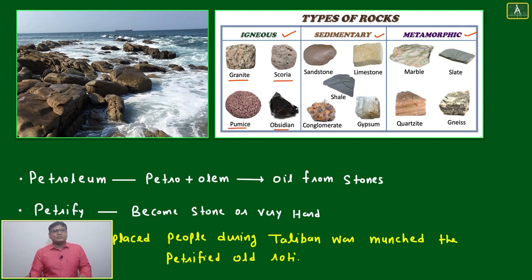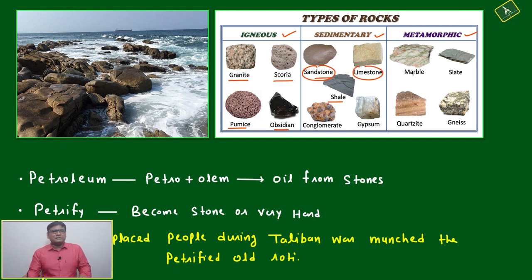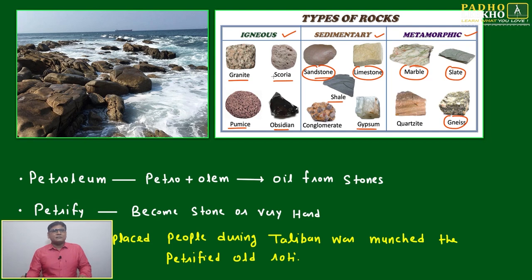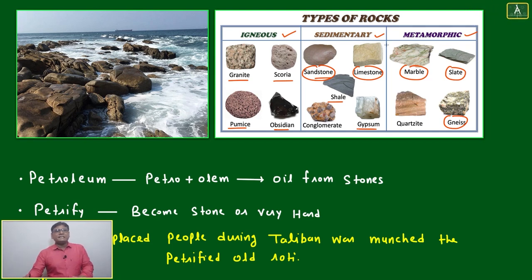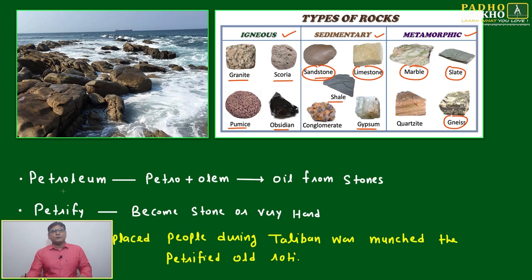Examples include granite, scoria, and so many others. Slate we are using, gypsum — but mainly these three categories: igneous rock, sedimentary rock, and metamorphic rock.